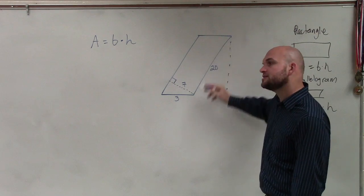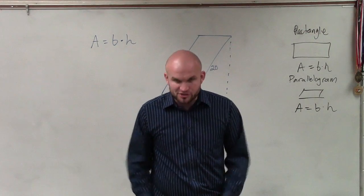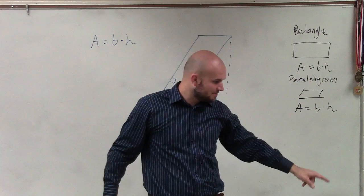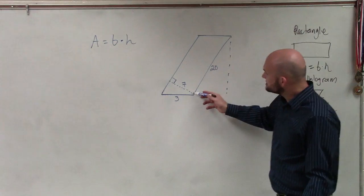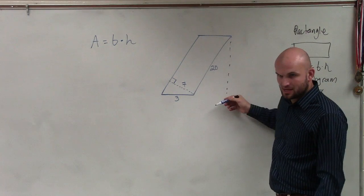20 is not the height because 20 is that slant. Remember, we discussed, if you're going to measure my height, you're going to go from my feet to my head. You're not going to measure my height from a distance over here to my head. 20 represents the length of this side, which is a slant, not the direct height.